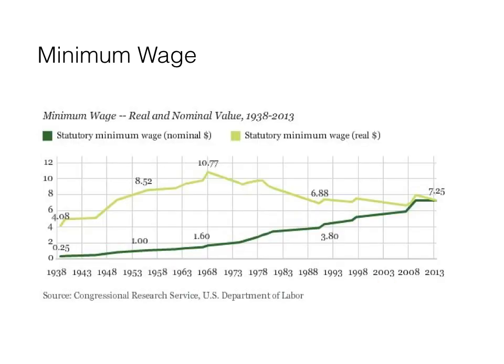This chart shows something pretty similar to the earlier one about average wages. If you adjust for inflation, the minimum wage in real dollars was highest in the late 1960s, meaning that's when it was able to purchase the most. Since then, the purchasing power of the minimum wage has fallen or stagnated. If you were a minimum wage worker in 1968, you were making the equivalent of $10.70 an hour in today's money.